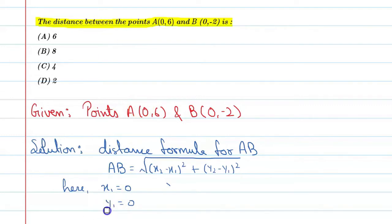So it is x1, not y1. Let me correct it. This is x2, x2 is also equal to 0. This is x1, this is x2. Now, y1 equals 6 and y2 equals -2.